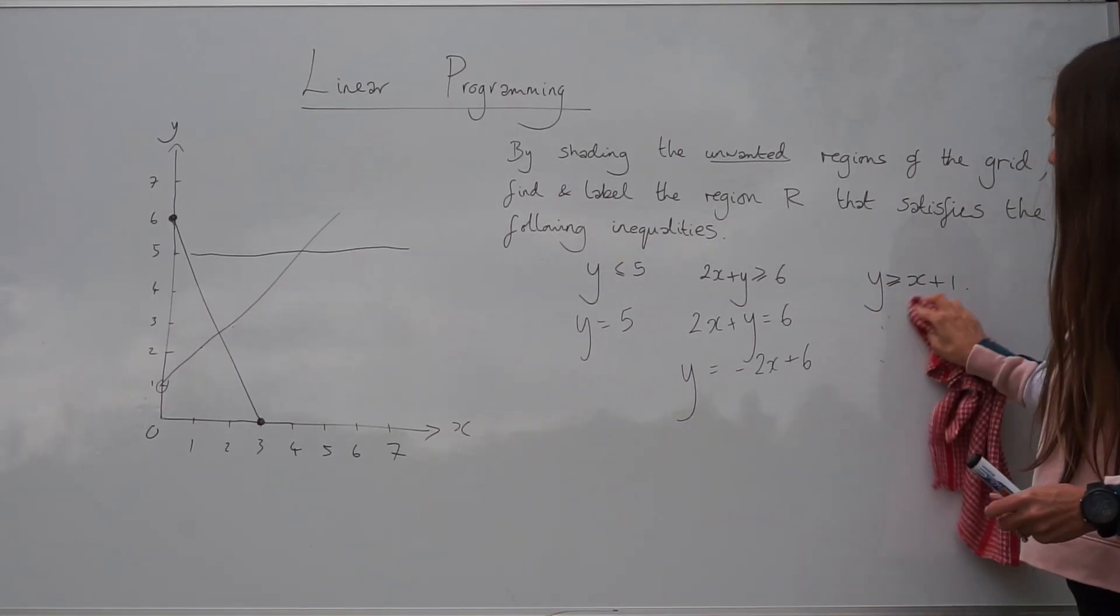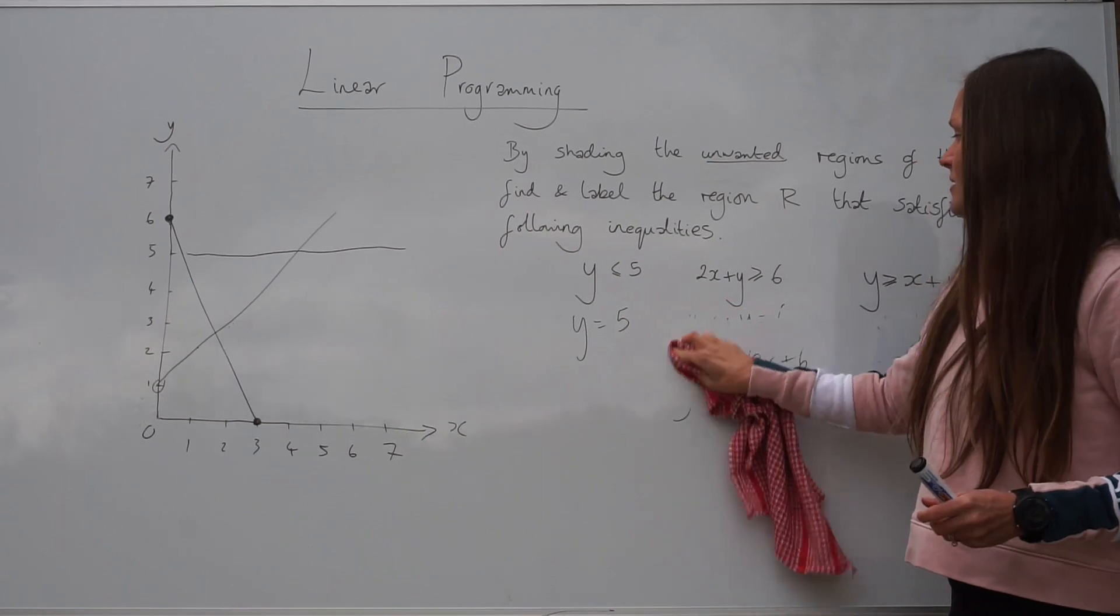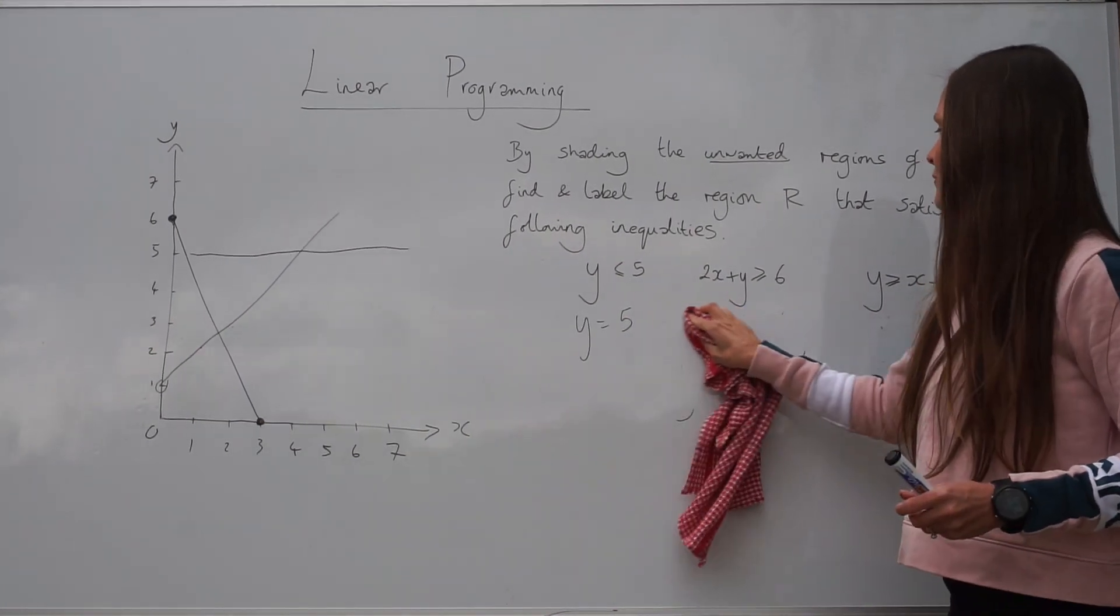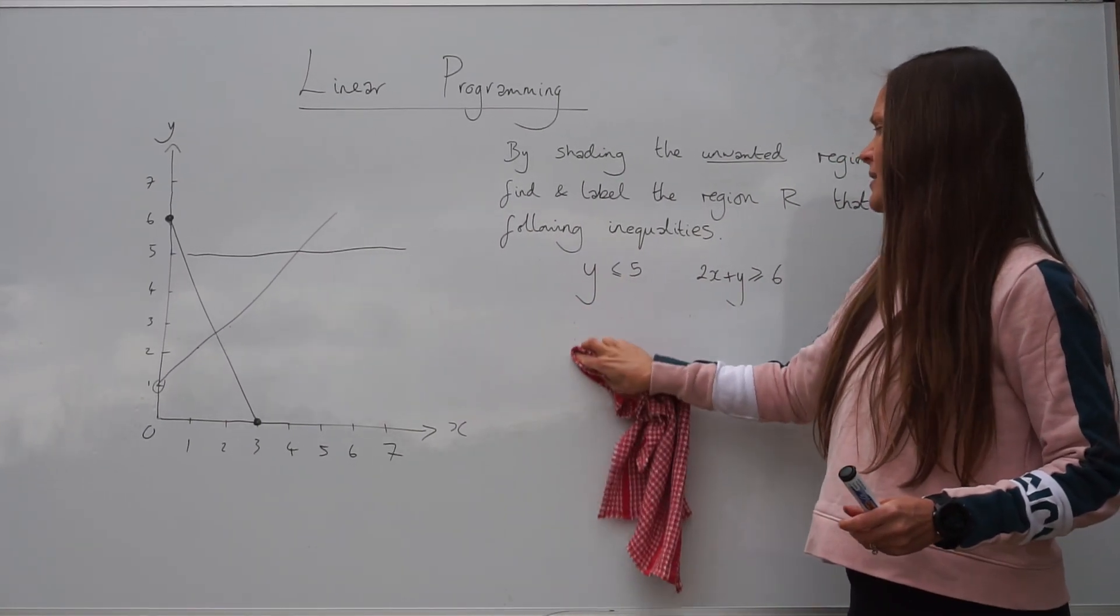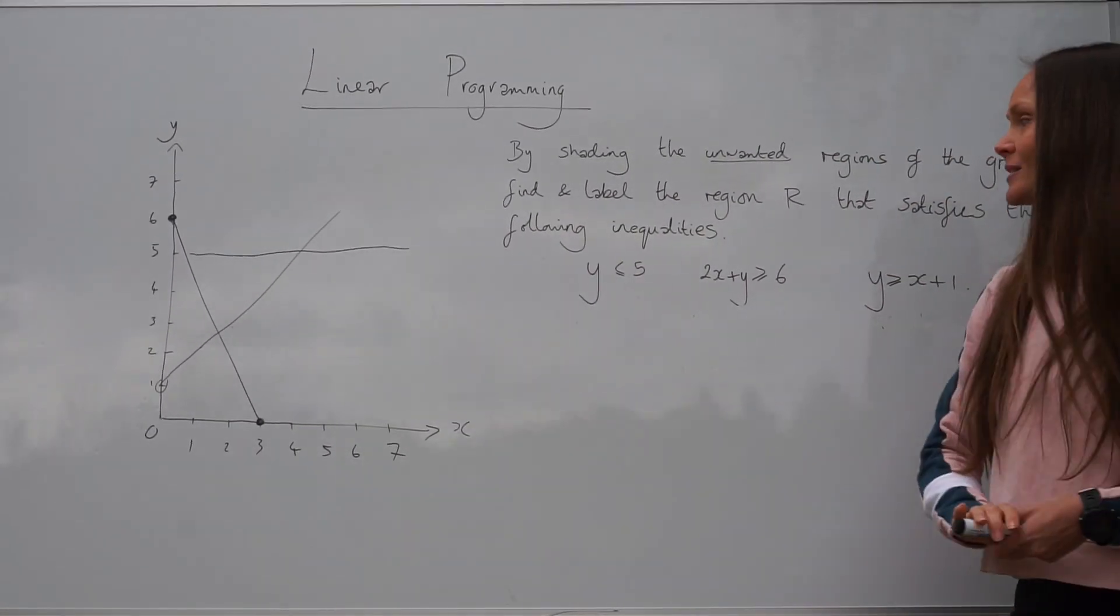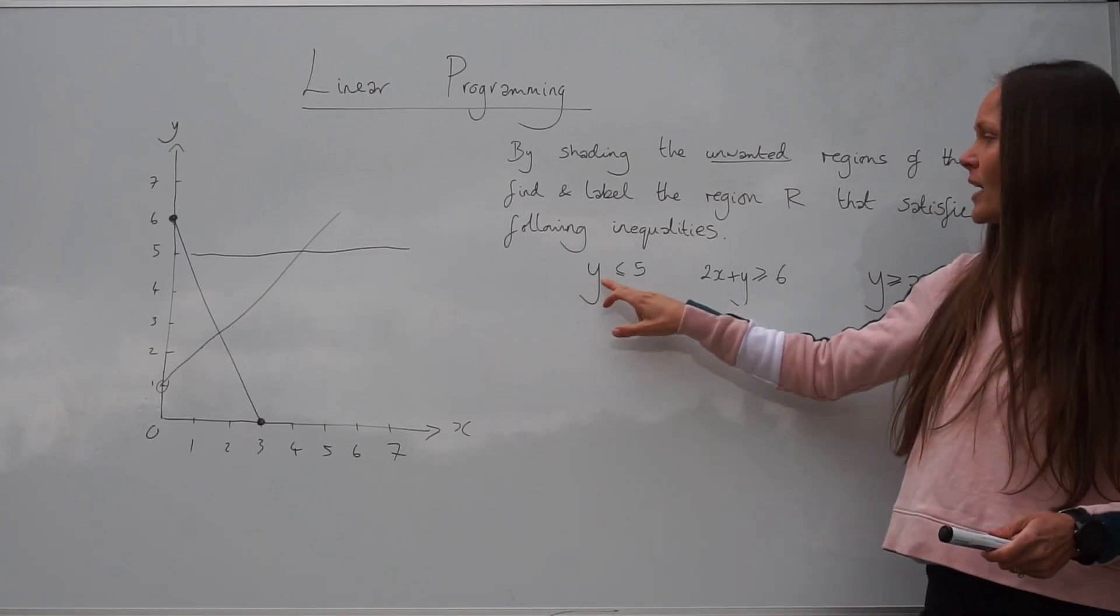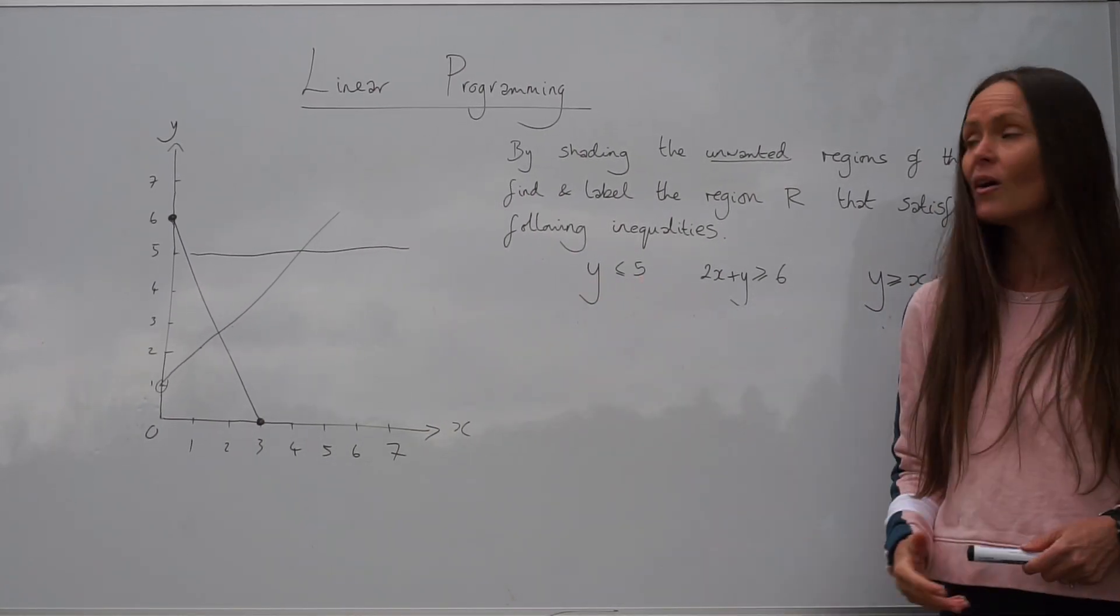Next, we have to shade the unwanted regions. And then the bit that's left over will be the region R that satisfies all of the inequalities. So let's look at the first inequality.